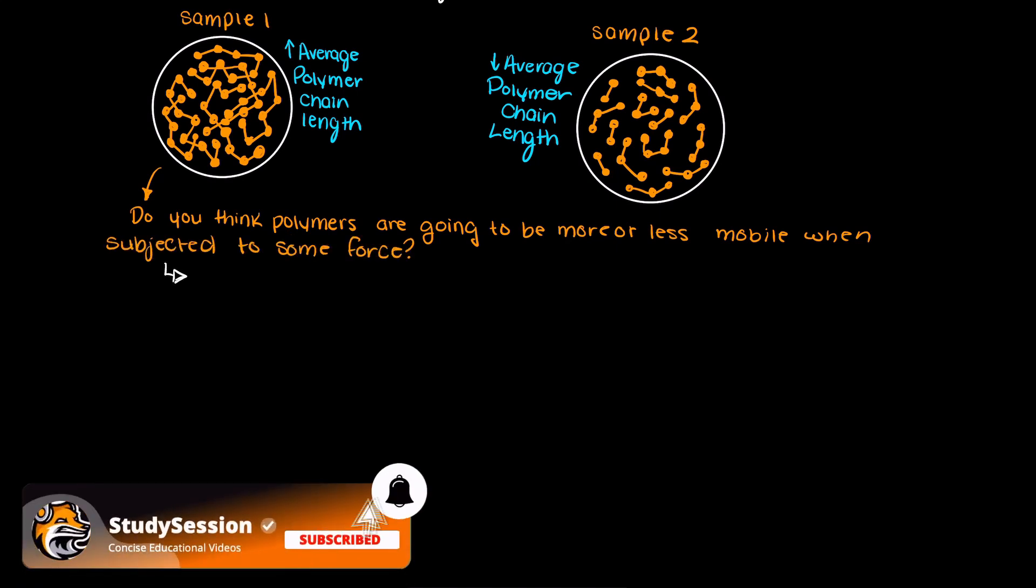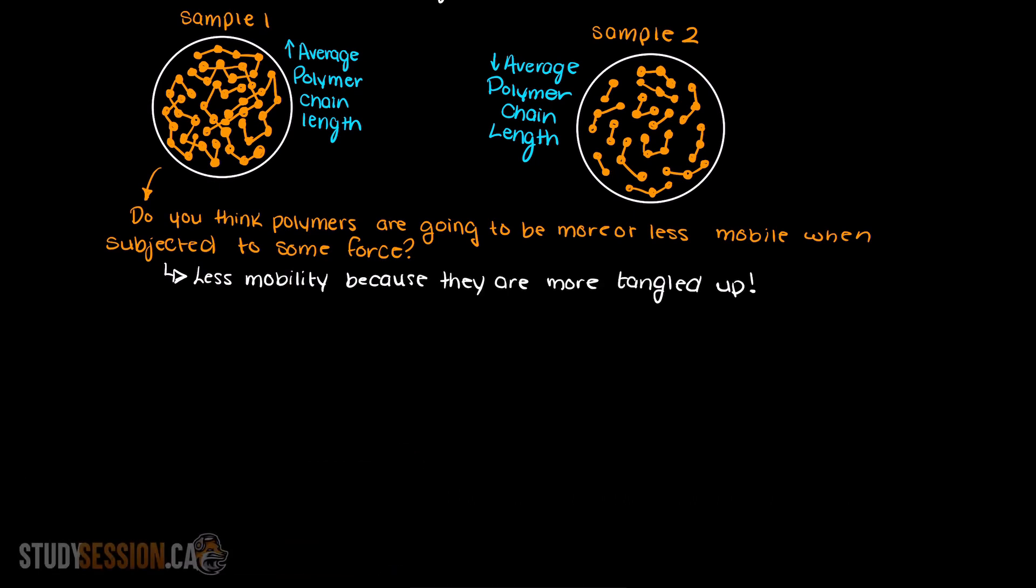With the larger length polymers, they have less mobility when subjected to a force. So this polymer sample is going to be much tougher than the lower molecular weight sample.